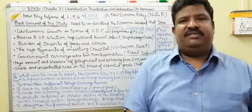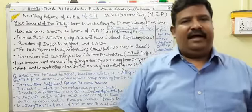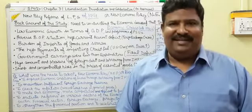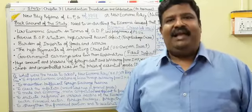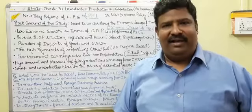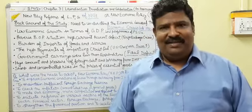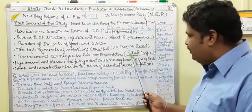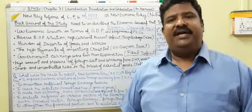PSUs also earn for the government. There are also ways for the outflow of money, known as government expenditures. Some expenditures do not give immediate repayments or returns because the government mainly spends money on social welfare — like education, infrastructure, health-related services, law and order, and defense. These do not give returns instantly.